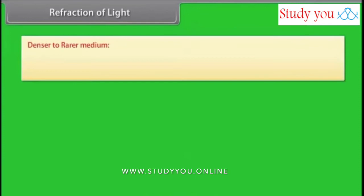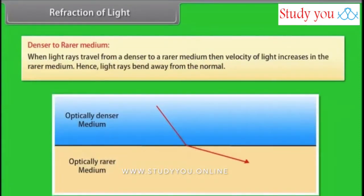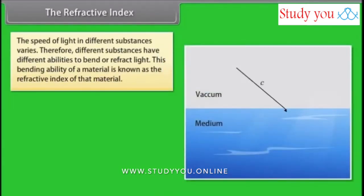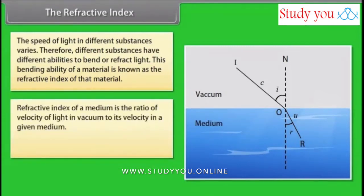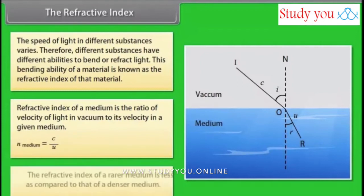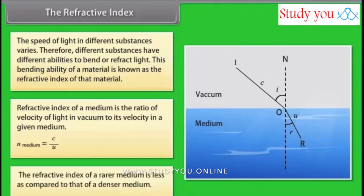When light rays travel from a denser to a rarer medium, the velocity of light increases in the rarer medium; hence, light rays bend away from the normal. The refractive index: since the speed of light in different substances varies, different substances have different abilities to bend or refract light. This bending ability is known as the refractive index of a material — defined as the ratio of the velocity of light in vacuum to its velocity in a given medium. The refractive index of a rarer medium is less compared to that of a denser medium.